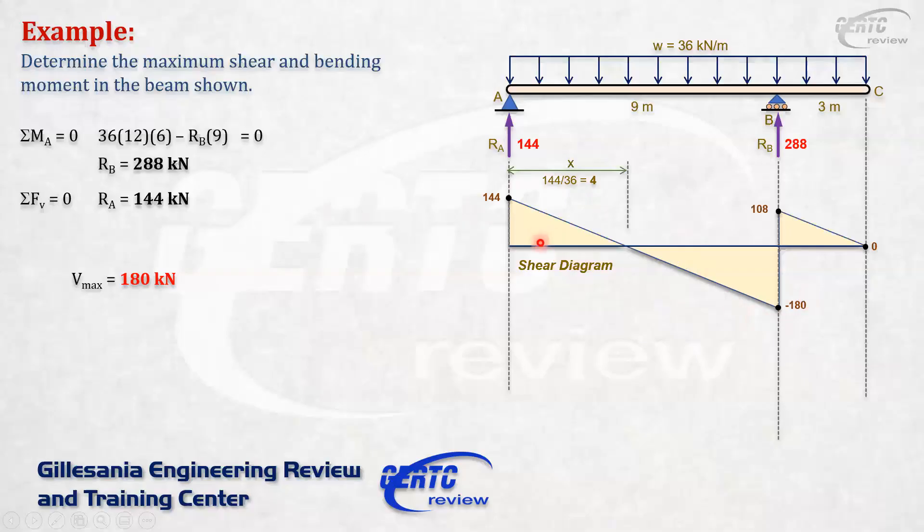So the area of this diagram here is 1/2 times 4 times 144, that's 288 positive. This is 5. You can check: 180 divided by 36 is 5. So this is 1/2 times 5 times 180, that's negative 450. This is 1/2 times 3 times 108, which is 162.